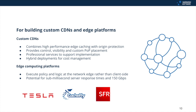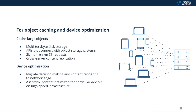Because Varnish Enterprise offers a customizable toolkit of high-performance edge caching nodes as well as its own language for programmable edge logic, it's ideal for building high-performance edge computing platforms. You can execute policy and logic at the network edge on high-speed infrastructure rather than client-side, with potential for sub-millisecond server response times and 150 gigabits per second throughput. Many enterprise customers also use Varnish Enterprise to cache large objects, often using protected S3 or a similar backend — it's perfect for accelerating delivery of content stored in backend object storage with multi-terabyte disk storage APIs that connect with object storage systems and the ability to sign or re-sign S3 requests.